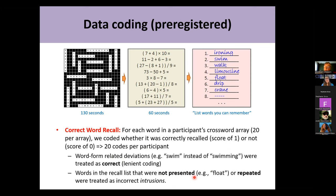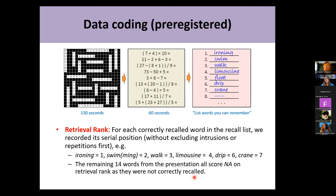Semantically related intrusions and synonyms often enter the recall list in word recall research. For retrieval rank, for each correctly recalled word we recorded its serial position in the recall list without first excluding intrusions or repetitions. So ironing correctly recalled was retrieval rank one, swimming retrieval rank two, and so forth — with intrusion words simply skipped over. The remaining words from the presentation that were not correctly recalled all received missing values.